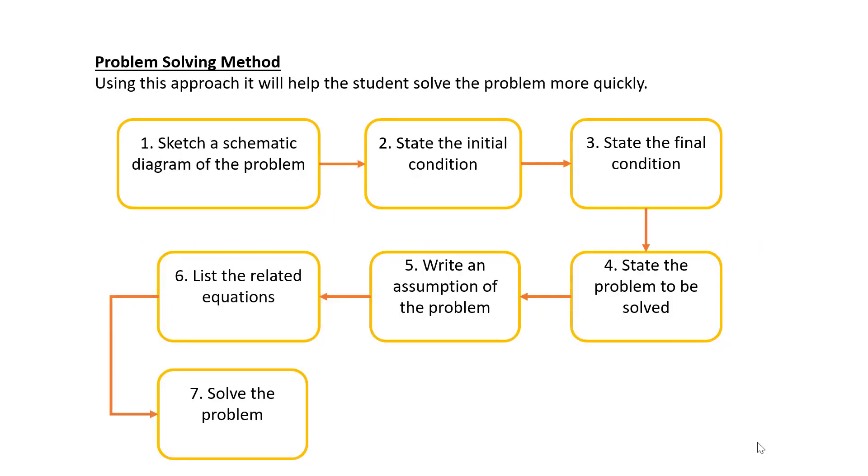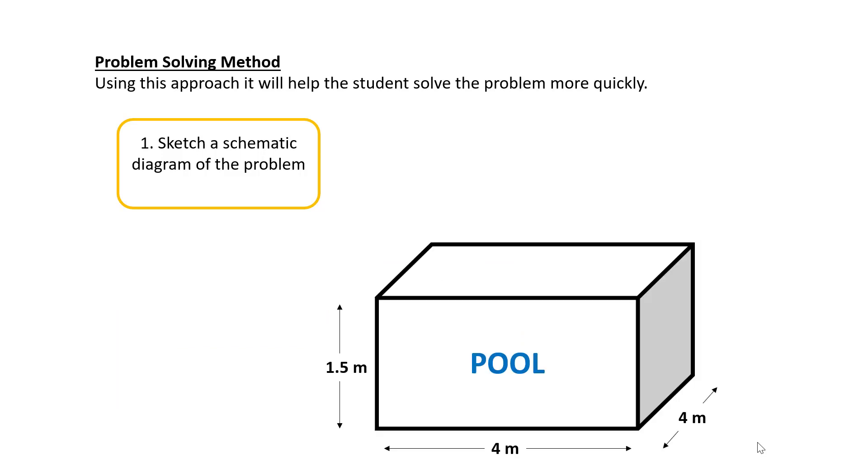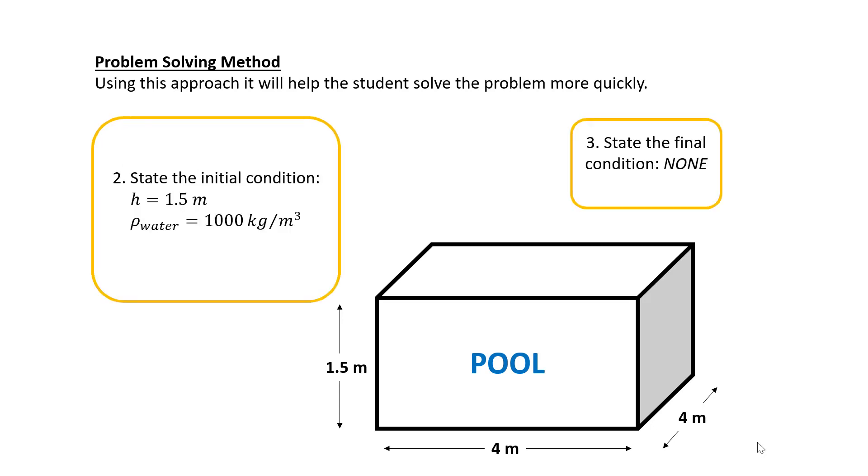Now let us use problem solving method to solve the problem. First, let us sketch a schematic diagram of the problem, in this case a swimming pool. Next, we will state the initial condition where H equal to 1.5 meters and the water density is considered 1,000 kg per meter cubic. Since the final condition of this pool does not change over time, so there is no final state.